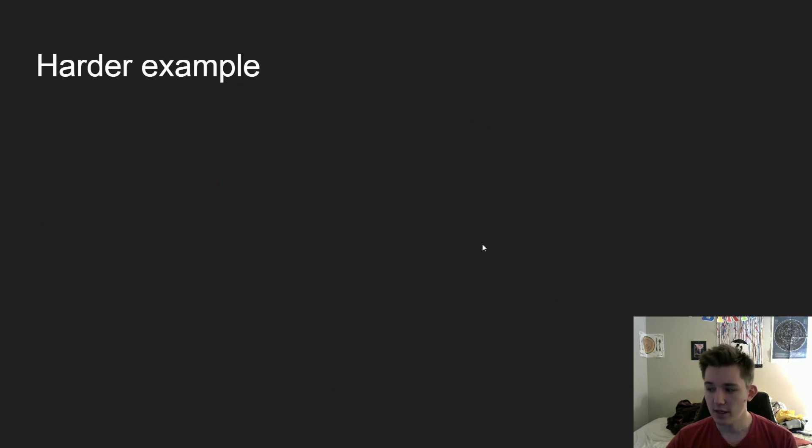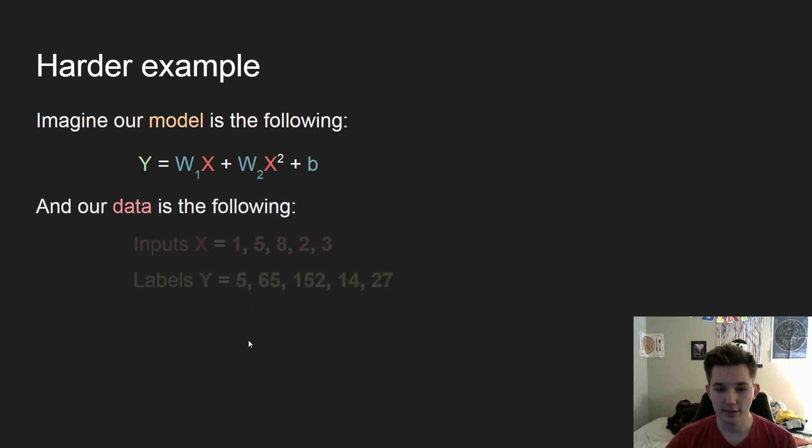So let's look at a harder example. And this will give you a little bit of an idea of the flexibility of what our models can actually look like. So imagine our model is the following. It is y equals w1x plus w2x squared plus b. And you can see very easily that this is not a linear function. We have our exponent right there.